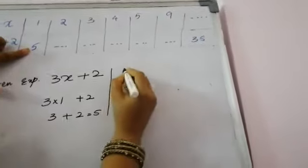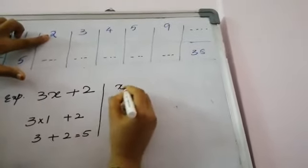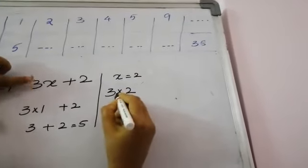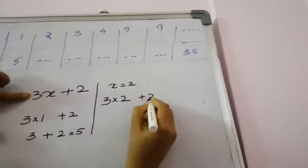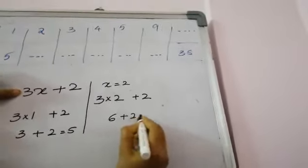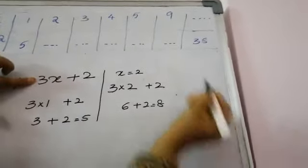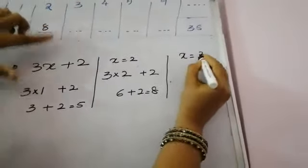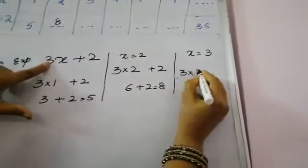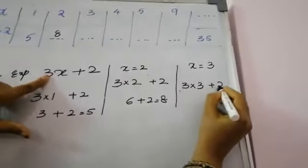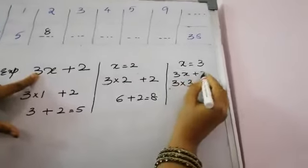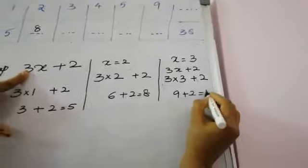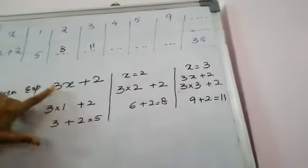When x equals 2: 3 into 2 plus 2 equals 6 plus 2, which is 8. When x equals 3: 3 into 3 plus 2 equals 9 plus 2, which is 11. Substitute eleven here. When x equals 4: 3 into 4 plus 2 equals 12 plus 2, which is 14. Substitute fourteen here.